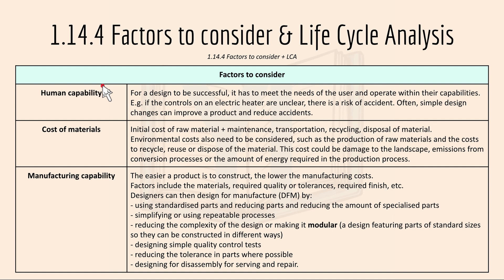1.14.4 covers the factors to consider and the life cycle analysis. The first factor is human capability. For a design to be successful, it has to meet the needs of the users and operate within their capabilities. For example, if the controls on an electric heater are unclear, there is a risk of accident. Often, simple design changes can improve a product and reduce the number of accidents.